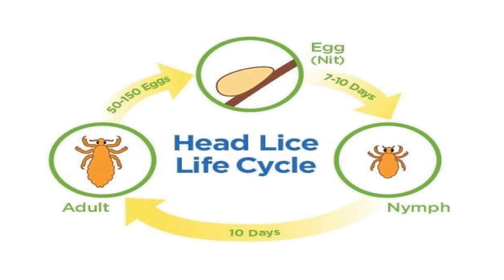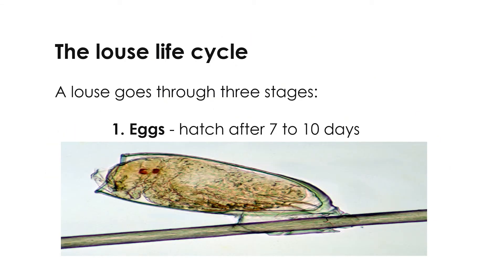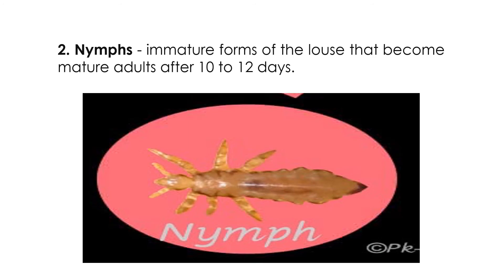The life cycle goes through three stages. Number one stage is the eggs. The eggs hatch after seven to ten days. This is the first stage.